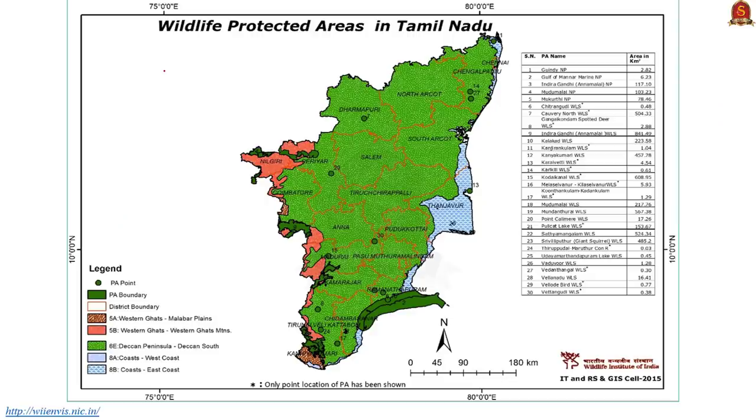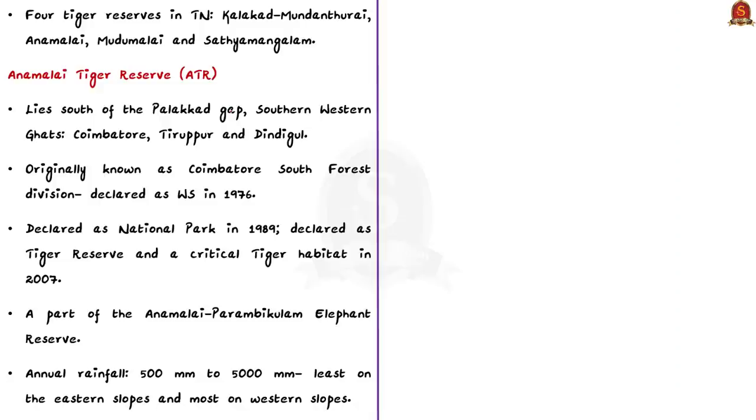Now have a look at this figure. It shows the protected areas of Tamil Nadu. There are 4 Tiger Reserves in Tamil Nadu: Kalakad-Mundanthurai, Anamalai, Mudumalai and Sathyamangalam Tiger Reserve. Today let us discuss in brief about Anamalai Tiger Reserve and Mudumalai Tiger Reserve.